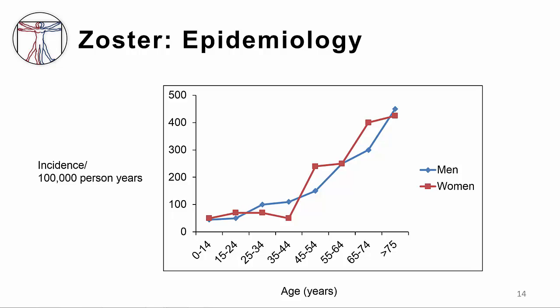Zoster, or shingles, is a disease of older patients and people with impaired immune responses. In this graph, you can see that the incidence goes up as you get older. Approximately 75% of shingles cases occur in people older than 45 years of age, with the highest rates in patients over 60. It's estimated that between half a million and a million cases of zoster occur in the U.S. annually. Transmission is primarily through contact with fluid from the vesicles.